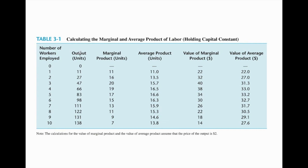The second column shows the number of outputs produced given the number of workers employed — starting from zero output when we hire zero workers. This represents the total output or total product. The third column is the marginal product. In the first range, we have what we call increasing marginal returns — as we hire an additional worker, outputs produced are increasing. However, from a certain point onward, it shows diminishing marginal returns. This situation occurs in the short run.